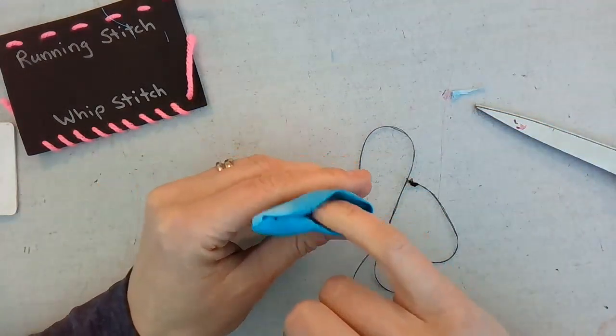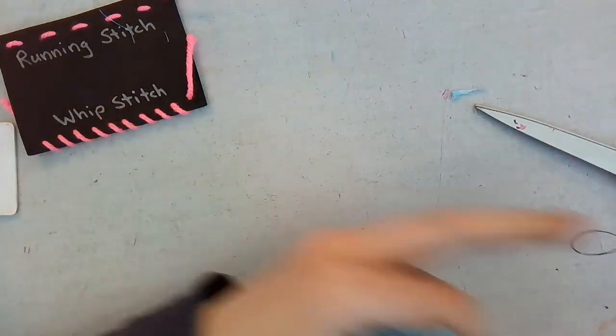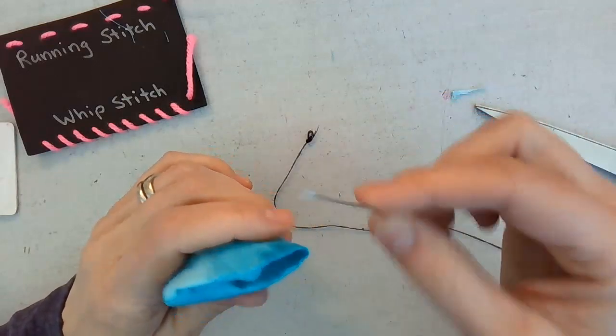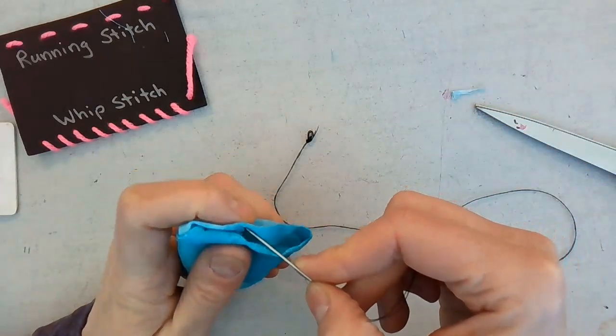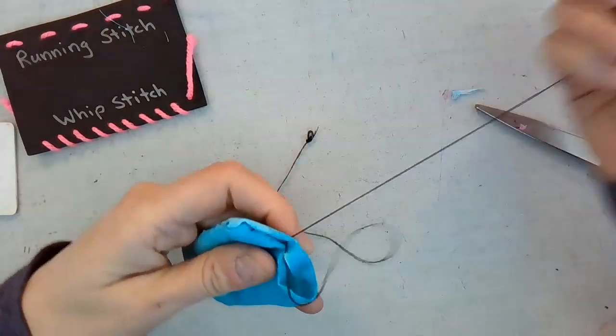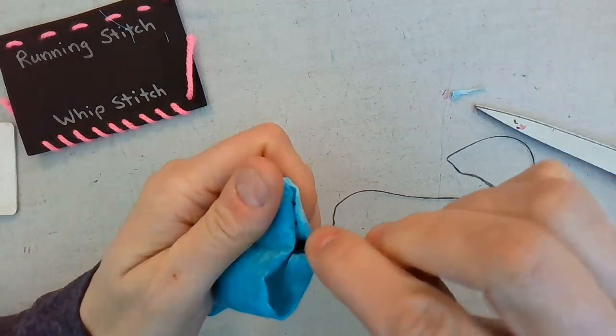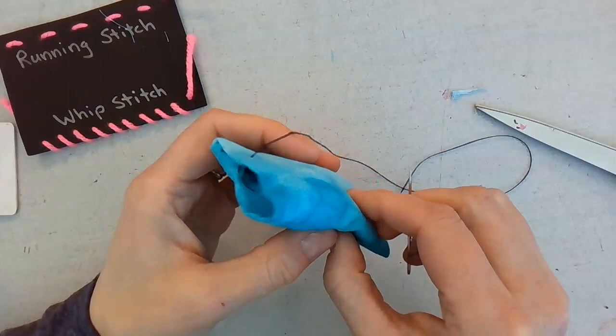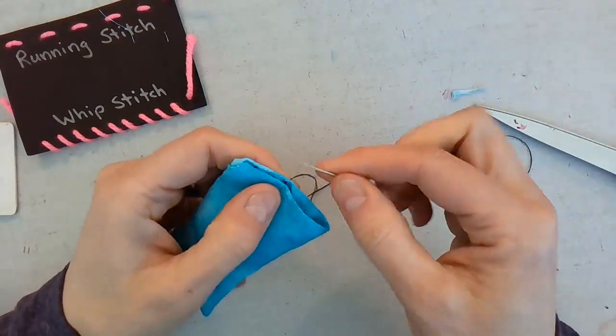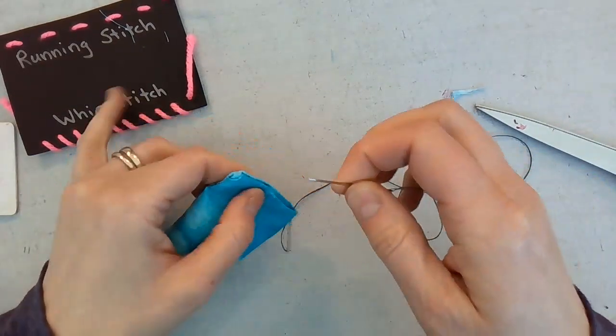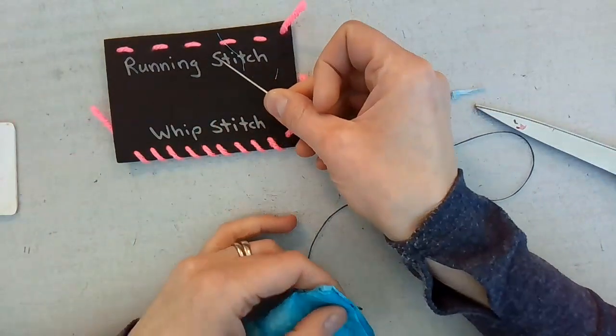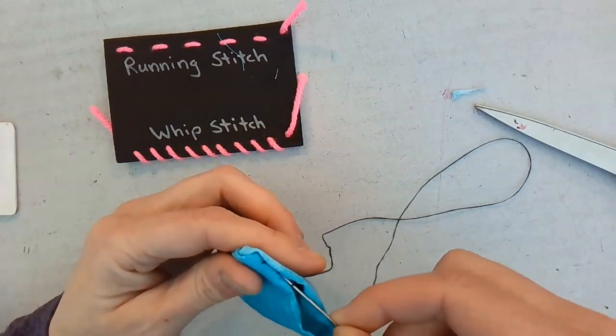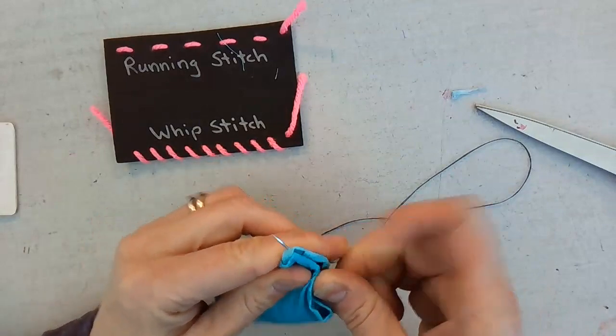You want to get this big knot in the inside of the pillow so you don't see it. So I'm going to start on the inside. And actually I'm going to just shove that knot in there. Instead of starting in the middle, I'm going to start all the way on one side. I'm going to get the needle all the way back on the other side here.